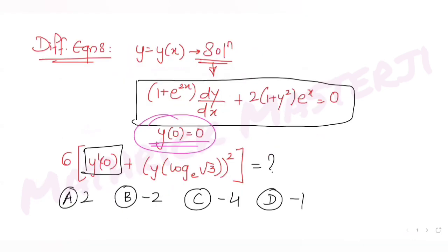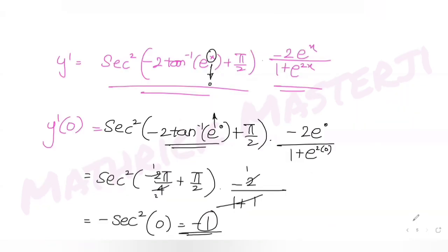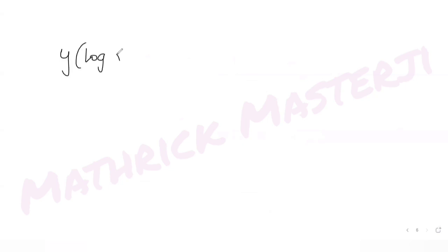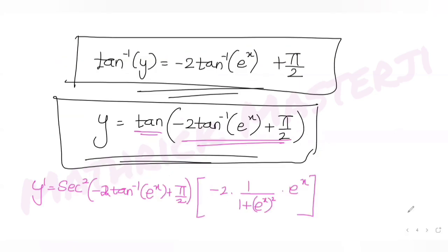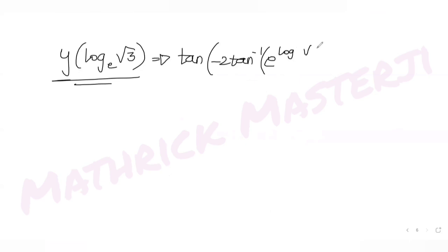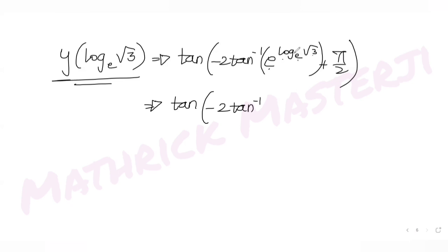Now finding y at x = log√3 (base e). Substituting into y = tan(-2·tan⁻¹(e^x) + π/2): since e^(log√3) = √3, we get y = tan(-2·tan⁻¹(√3) + π/2).